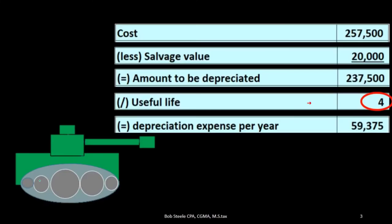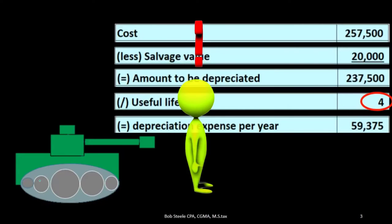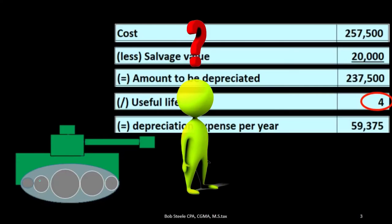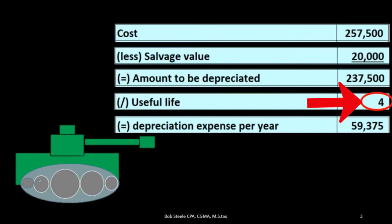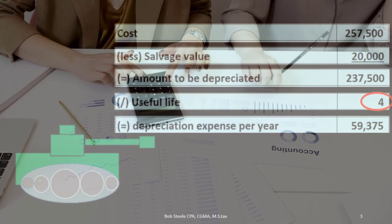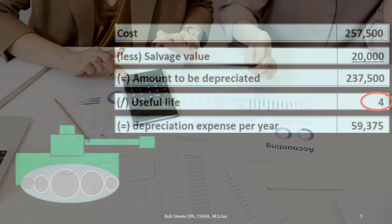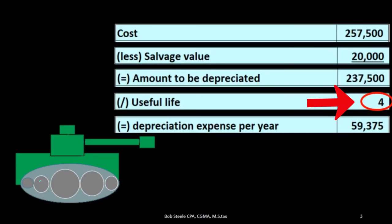Our question then is, if we think we're going to have this asset for a significantly longer or shorter period of time, what do we do at this point in time? Oftentimes, we are going to fix the estimate as of this point forward — meaning take the depreciation, oftentimes the book value as it is now, and then adjust it for the useful life that we think is relevant at this point in time.